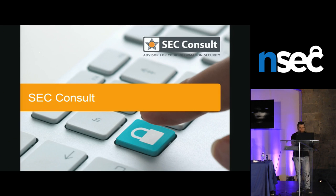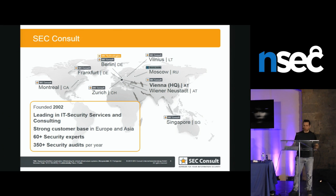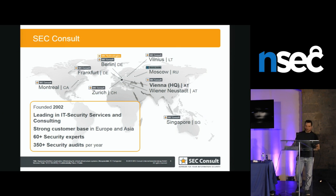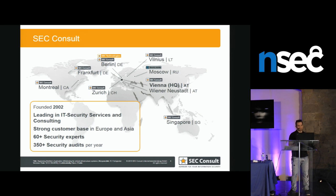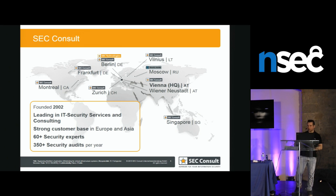One slide about our company. For everyone who doesn't know us, we are located in Vienna, Austria — our headquarters — but we have offices all around the world, including Montreal. Most importantly, we are also hiring. If you're searching for a new cool job, just come to us. With a team of over 60 security experts — really technical persons — we make over 350 security audits per year.